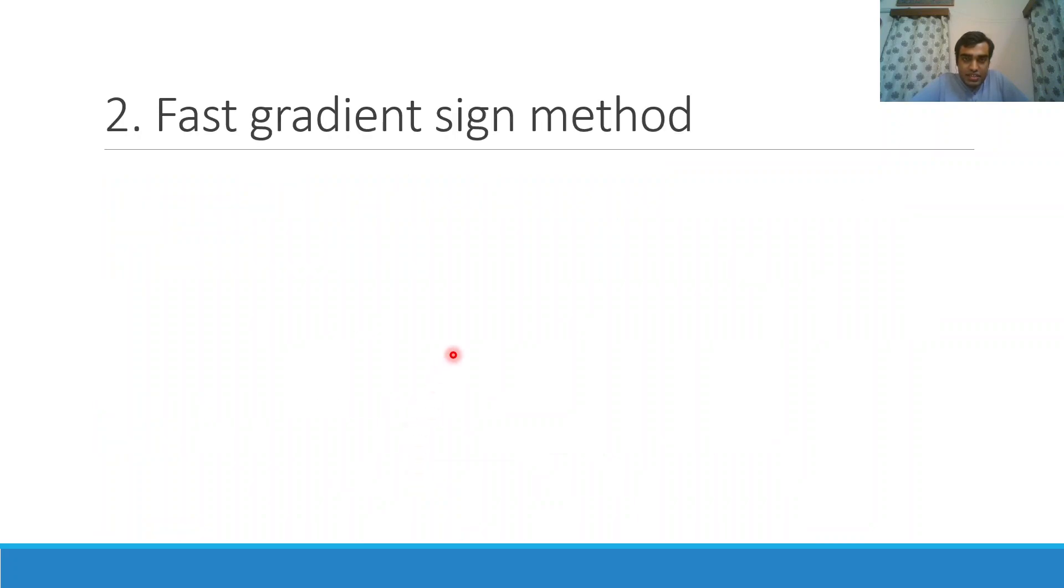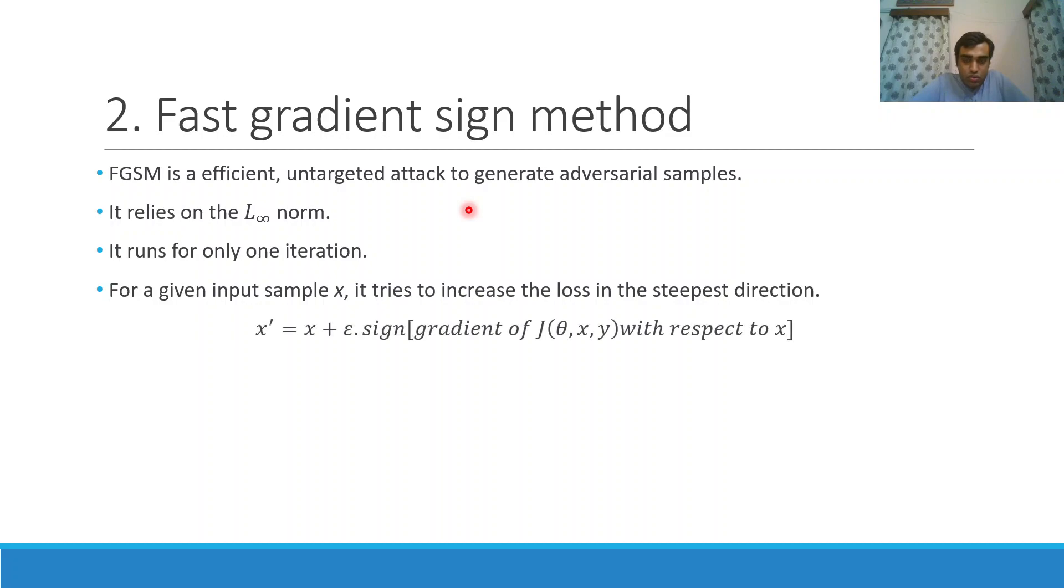Our next method is fast gradient sign method, which is efficient but an untargeted attack to generate adversarial samples and it relies on the L infinity norm. It runs for only one iteration. In one iteration for a given input sample, it tries to generate an adversarial sample by moving in the direction of the steepest increase. The intuition is to increase the adversarial loss so that the neural network is confused. While training we try to decrease the loss of the network, but here we are deliberately trying to increase this loss by moving in the direction of the gradient. Here gradient is found with respect to the input and not with respect to the parameters of the model.